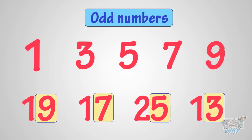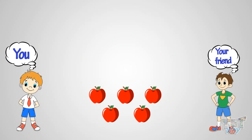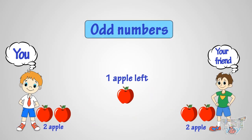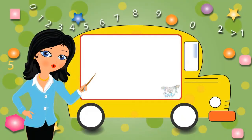So what have we learned? We have learned that any number of things that cannot be shared equally are odd number of things. Now, go ahead and take a quiz to see your progress. Bye-bye.